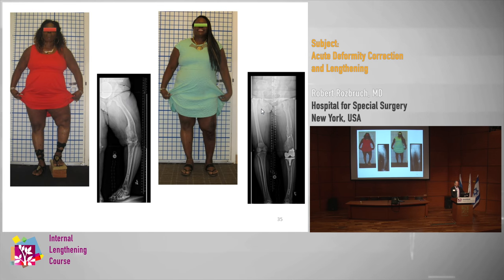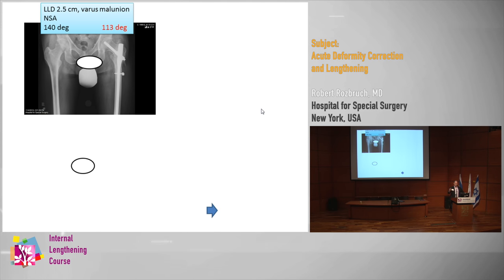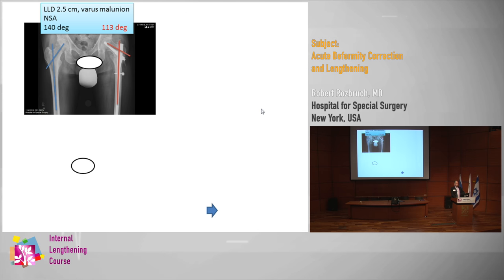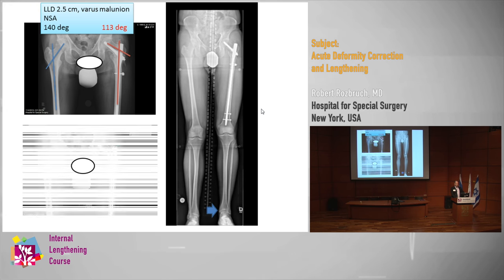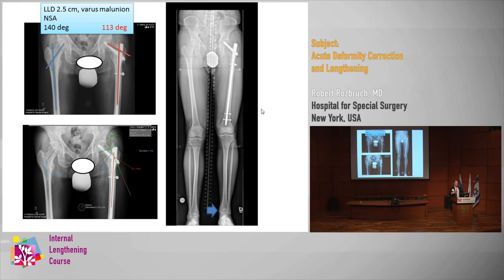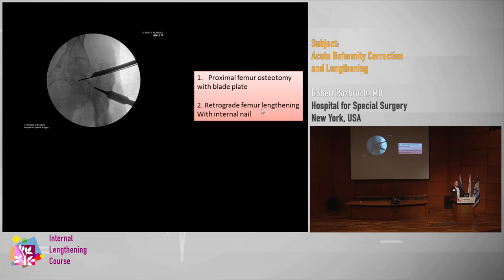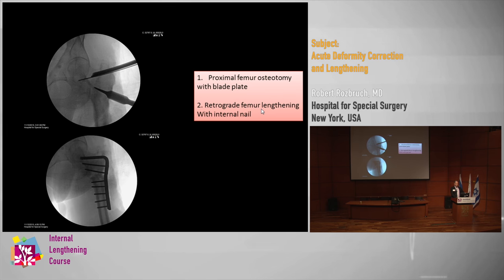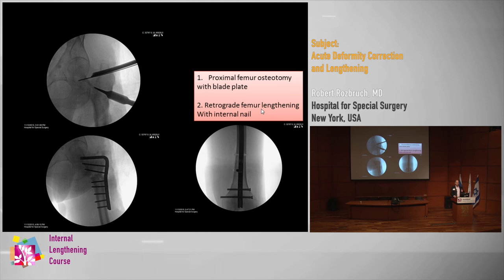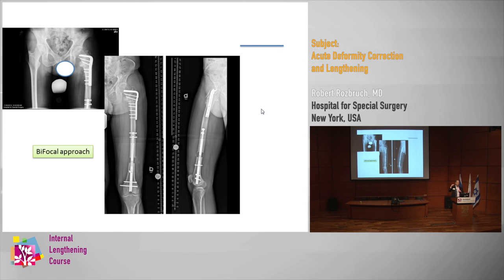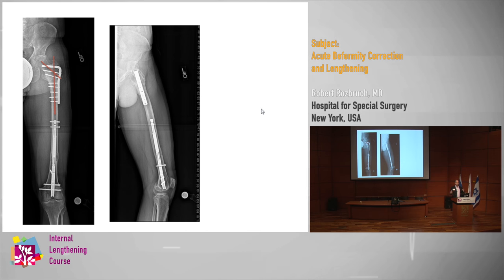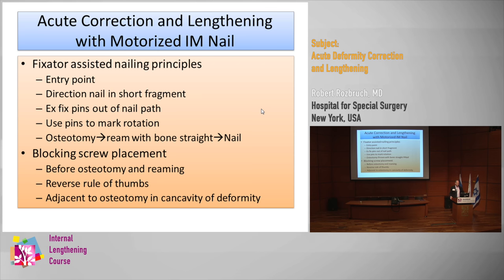This is the opposite of bifocal — where you're doing deformity correction on one end and lengthening on the other. This patient has a malunion of the proximal femur with decreased neck shaft angle from traumatic injury. My plan was to do a blade plate proximally with blade plate planning proximal to correct the varus deformity. But I'm not going to correct the full leg length discrepancy by doing that alone, so at the same time I did a retrograde femur lengthening. The blocking screw here was really just to prevent varus during the lengthening.